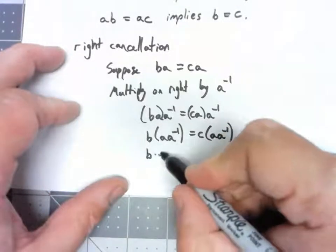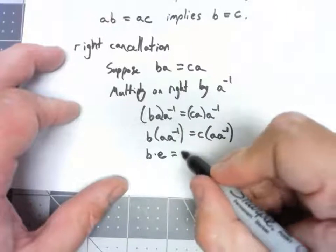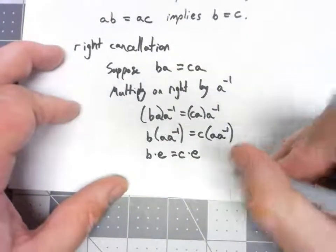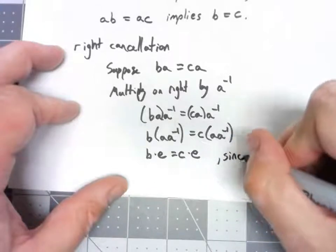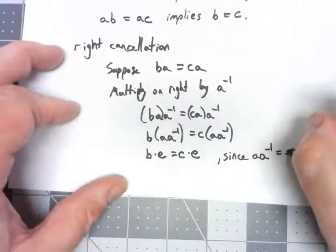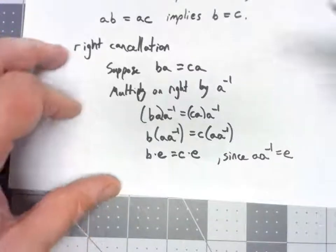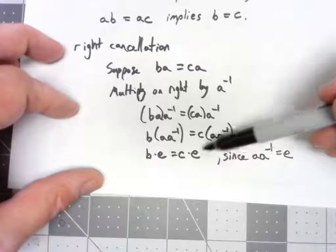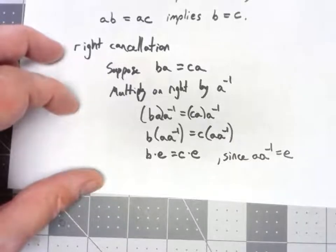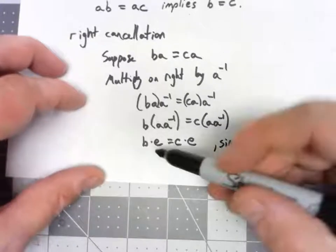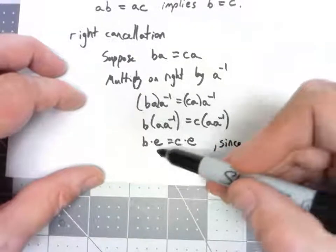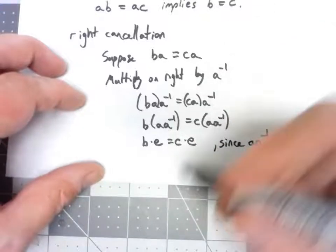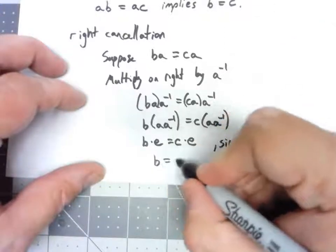So B times E is equal to C times E. And I should point out, I've been doing this all along, but it's very standard to just call the identity element E. It comes from the German word for identity. Okay, but now we know that the identity times anything is equal to that thing, so B equals C.